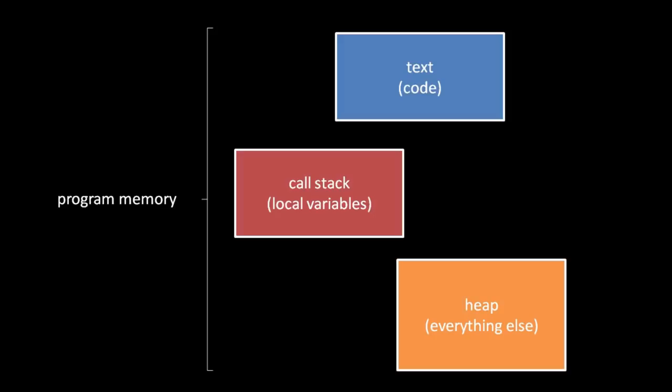In a previous unit, we discussed how the address space of a process is split into three parts: the text section, the stack, and the heap. The text section simply stores the code of the process and is generally made read-only. The stack is a contiguous chunk in which we keep track of the chain of function calls and store their local variables. The heap is effectively the rest of the address space, where we can store any data other than local variables. Whereas memory for the text section and the stack is effectively automatically allocated by the operating system, memory for the heap must be manually managed by the programmer.